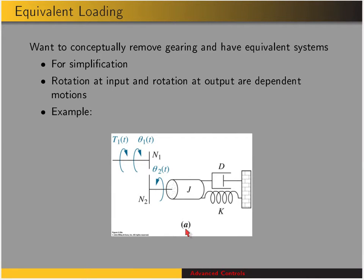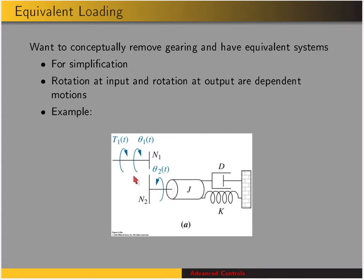Whenever we have gearing, this changes the impedance seen by the motor. If we have a moment of inertia, damping, and spring at the output shaft of a gear, then the motor or input shaft is going to see a different loading than what's on the second shaft. So we want to find an equivalent system — what impedance does the input shaft see? We do this for simplification.